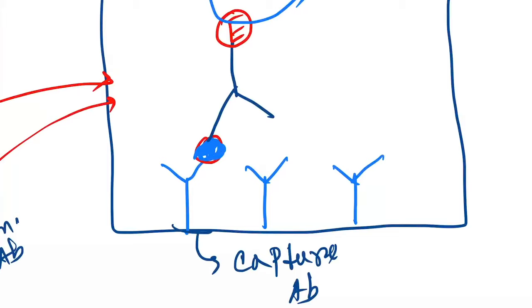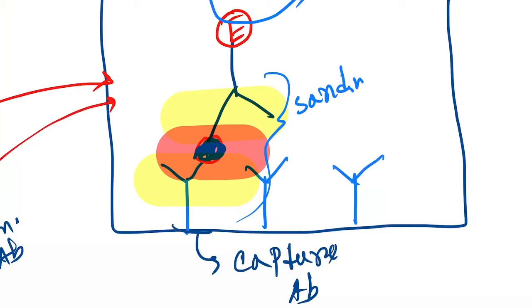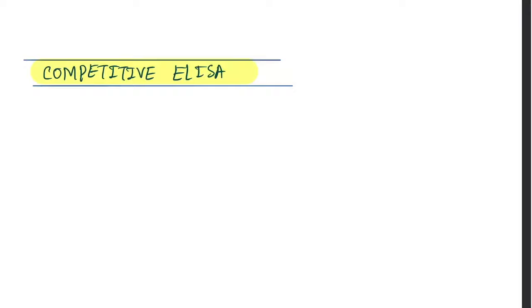The name 'sandwich' comes from the arrangement: there is an antibody on one side, another antibody on the other side, and in the center is the antigen — forming a sandwich structure.